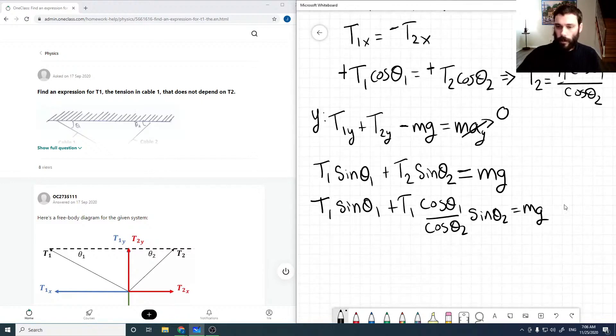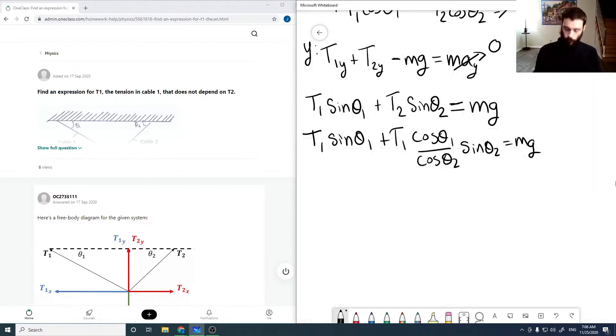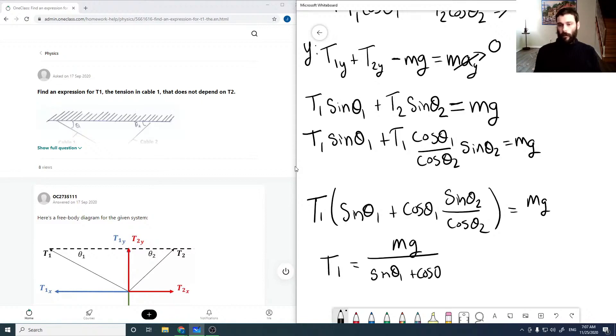And now we can rearrange this expression to find the tension in the first cable. So taking out T1 and just putting the stuff that has 2's on it together, or dividing by this whole thing, T1 is equal to mg over sin theta 1 plus cos theta 1 times sin theta 2 over cos theta 2. And so that's our tension expression.